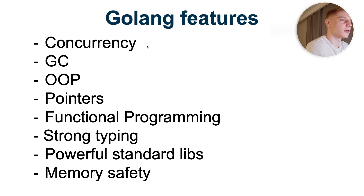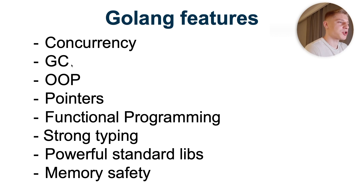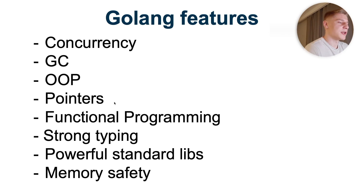Let's move on and compare features. Golang features look as follows. Go supports concurrency, implemented via goroutines and channels. Golang has a garbage collector. Golang supports object-oriented programming — it has composition, encapsulation, and polymorphism. However, Golang does not support inheritance. Golang also has pointers, so it's up to you to operate with a variable via its value or via the address of that variable.